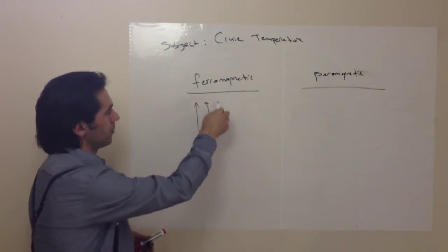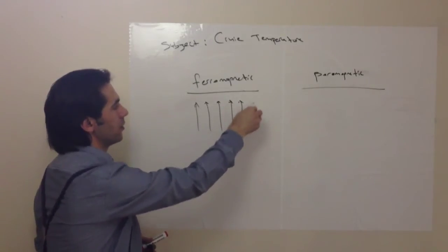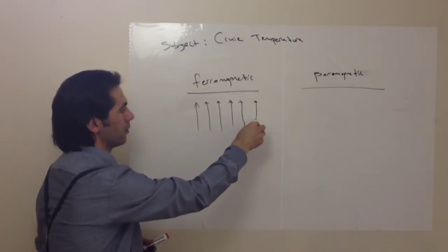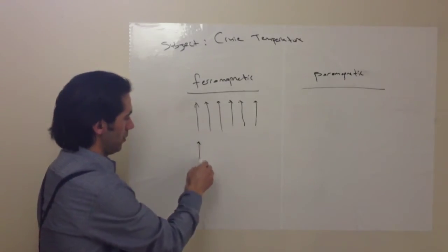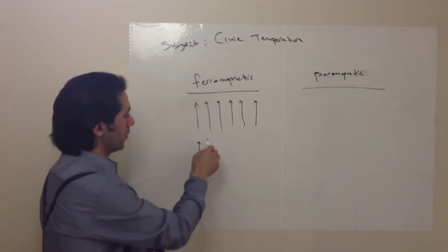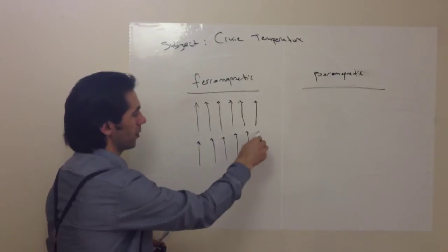When our metal is ferromagnetic, magnetic spins are aligned in one direction, something like that.